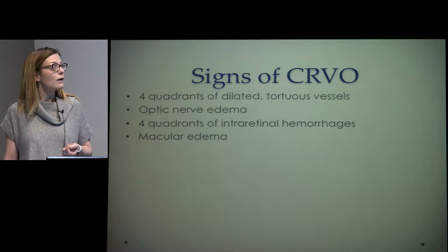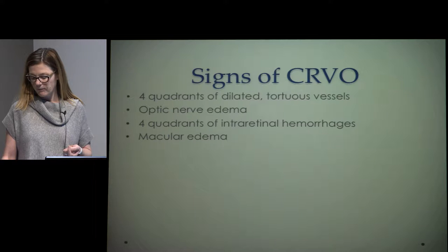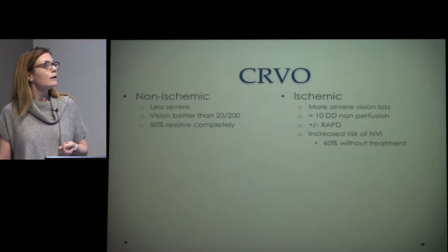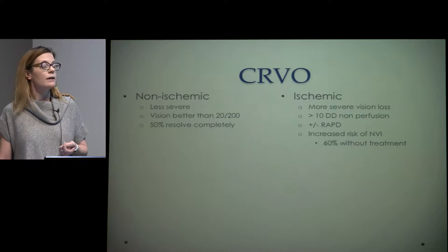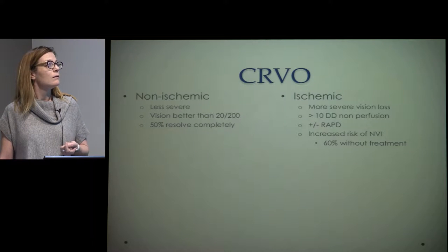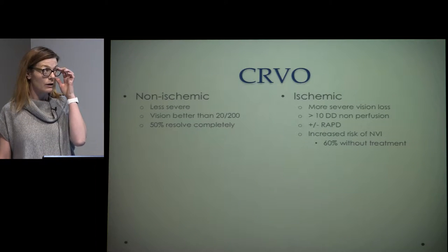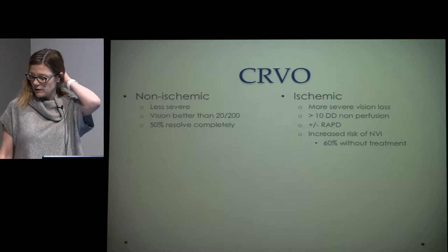Starting with central retinal vein occlusions, the main clinical signs are four quadrants of dilated tortuous vessels with optic nerve edema, four quadrants of intraretinal hemorrhages, and often macular edema. We break these up into non-ischemic and ischemic types. Non-ischemic is milder with better vision and can resolve without treatment. The ischemic form is much more severe, with less perfusion — typically more than 10 disc diameters of non-perfusion — and often a relative afferent pupillary defect. The ischemic type carries a higher risk of neovascular complications; 60% will develop neovascularization without treatment.